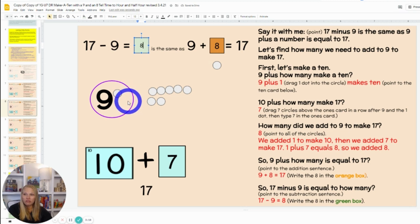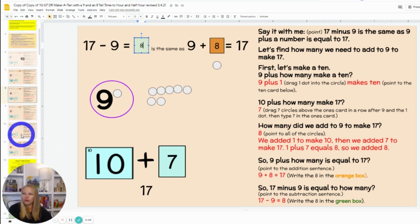We can also count on: 10, 11, 12, 13, 14, 15, 16, 17. We're right.